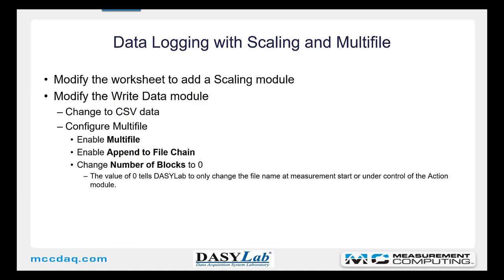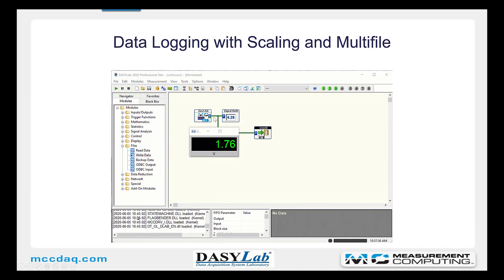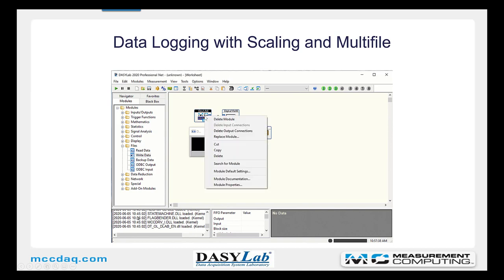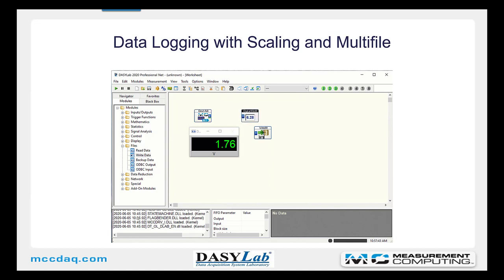Now I want to add scaling and the multi-file feature to the write data module. We're going to modify the worksheet to add the scaling module, rearrange everything in series, and then modify the write data module to change it to CSV data and enable the multi-file safety feature — this creates a new file every time you start the measurement. After rearranging the existing worksheet, I'll start by deleting the channels from the analog input, then move the modules to make room for a scaling module. Open the mathematics group and select the scaling module.